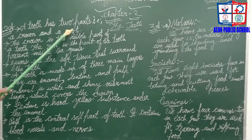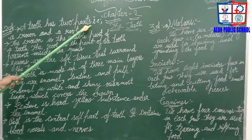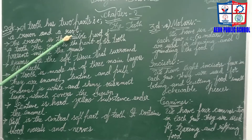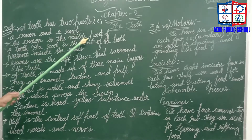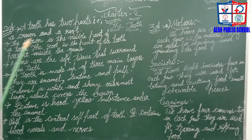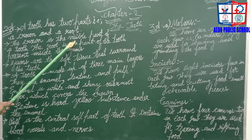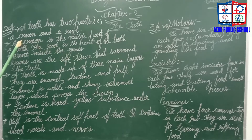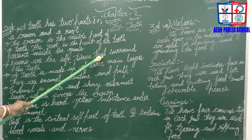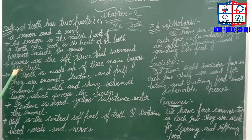A tooth has two parts: a crown and a root. The crown is the visible part of a tooth. The root is the part of the tooth present inside the gum. Gums are the soft tissue that surrounds the teeth.